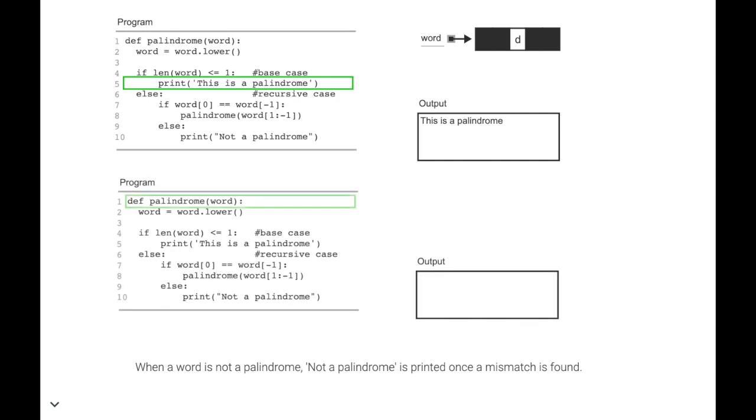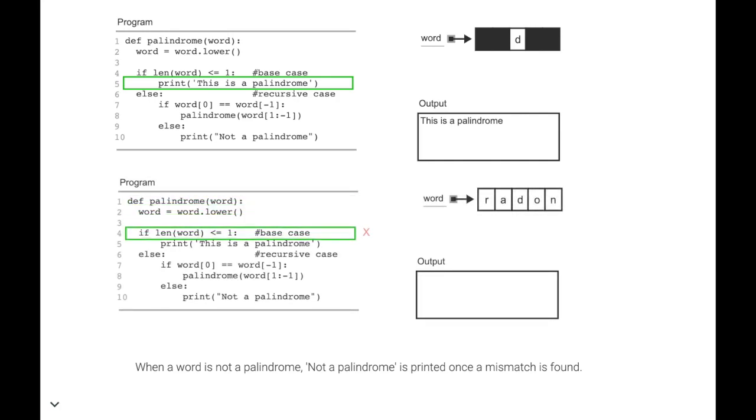When a word is not a palindrome, 'not a palindrome' is printed once a mismatch is found.